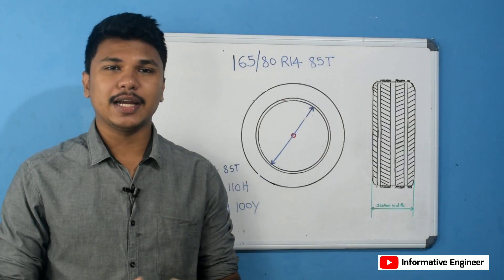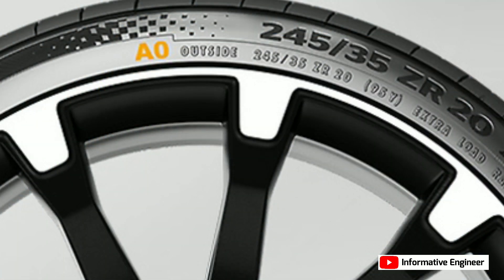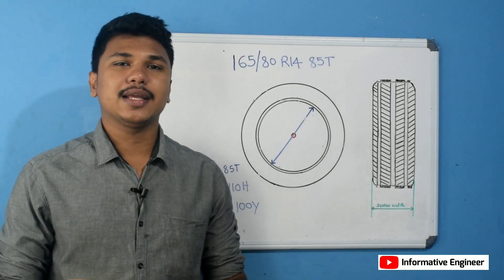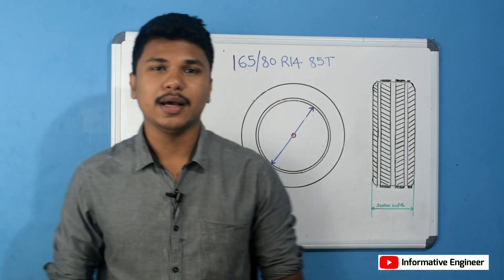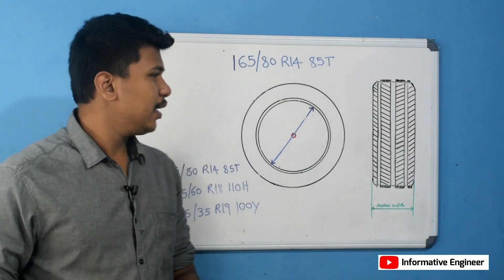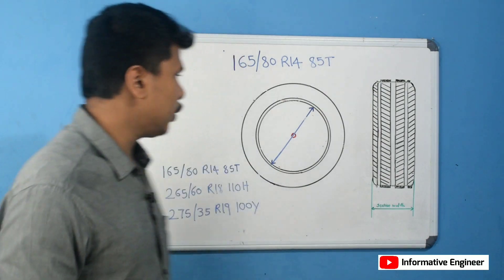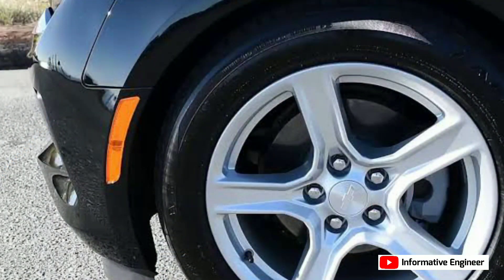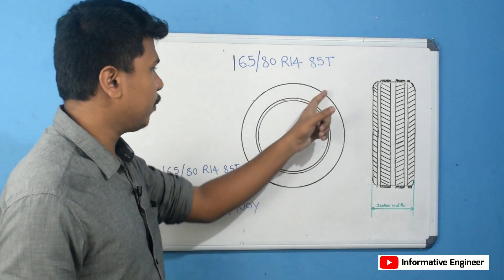An image is placed on the sidewall of a tire. As you can see in this frame, your image is placed on a sidewall of a tire. This is the sidewall of the rear view. As you can see here, the assembly of the wheels and tire is shown from the rear view.